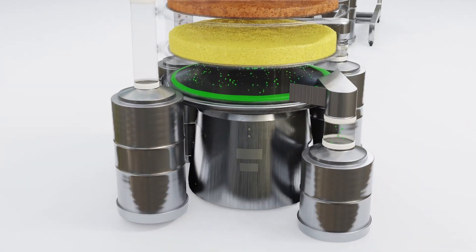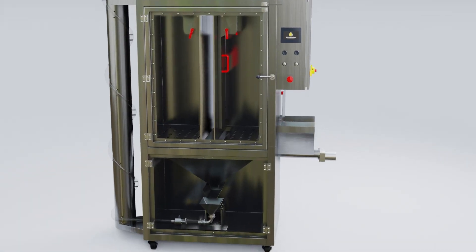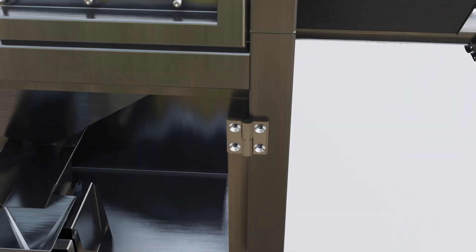Undersized particles are filtered out and collected for subsequent solvent extraction. The refined trichomes are then directed to the Plasma Static Separator for further refinement.